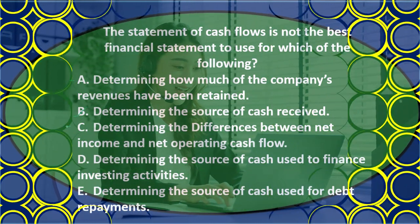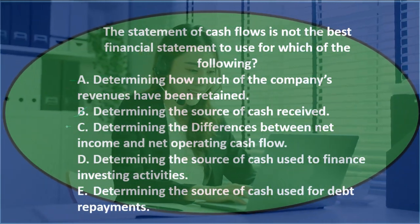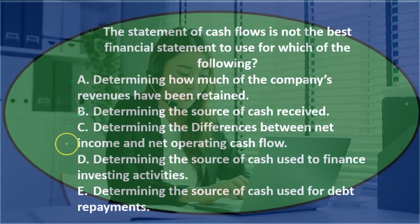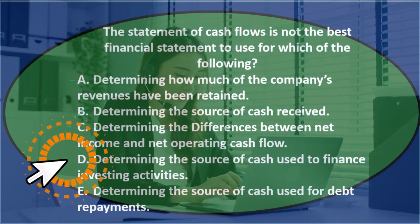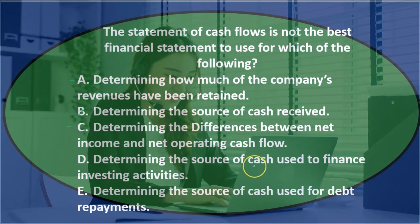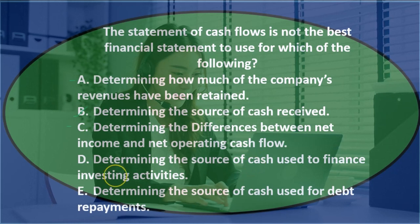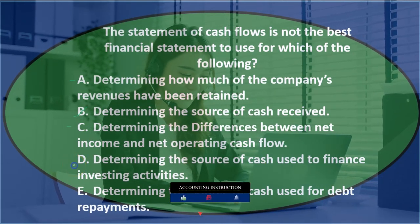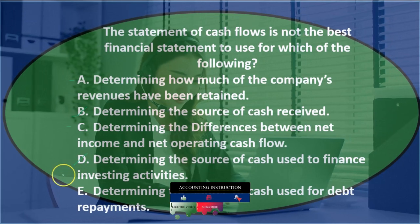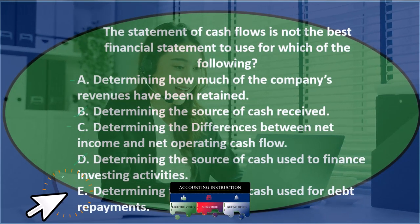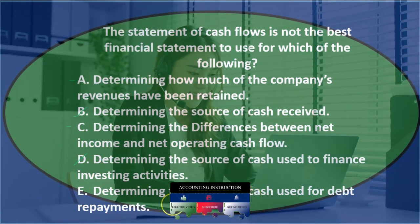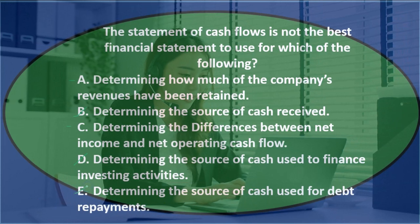It differs depending on whether we're using the direct or indirect method. D — determining the source of cash used to finance investing activities — that involves cash being used, so it would be on the cash flow statement. E — determining the source of cash used for debt repayments — cash used is a flow term, so that would be on the cash flow statement too. So we're down to A or C.